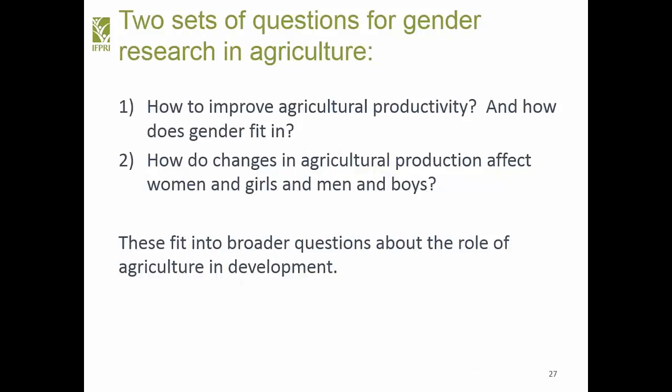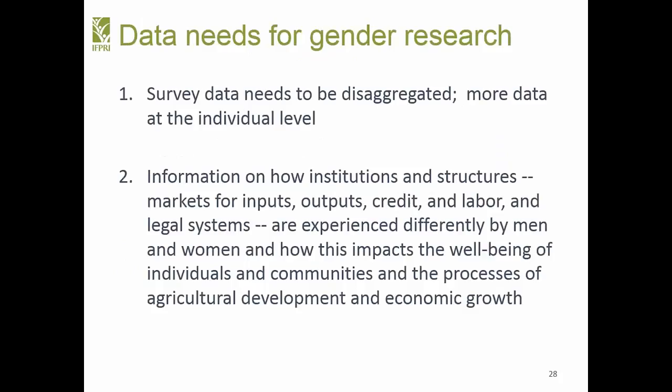Broadly, when doing research in agriculture and gender, there are two sets of questions: how do we improve agricultural productivity in the particular value chain we're interested in, and how does gender fit in? And how do changes in agricultural production affect women and girls, and men and boys? These fit into broader questions about the role of agriculture in development. To be able to answer those questions, what you need is more disaggregated data — more data at the individual level, to know who does what.